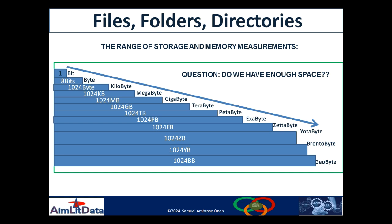This is the evolution of storage and memory sizes, which define the size of the files, folders, and directories we use currently. But the question remains: do we have enough space? Currently we don't have a yottabyte file system. The world has only a zettabyte of total storage, but we haven't got a zettabyte hard disk yet. The hard disks available in the market now go up to about a terabyte — a petabyte hard disk is essentially unheard of.